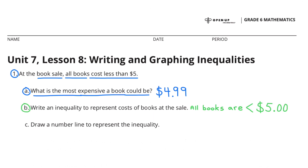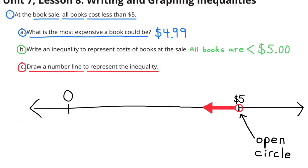B. Write an inequality to represent the costs of books at the sale. All books are less than $5.